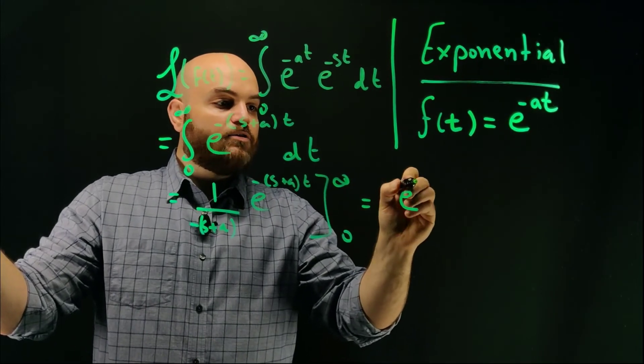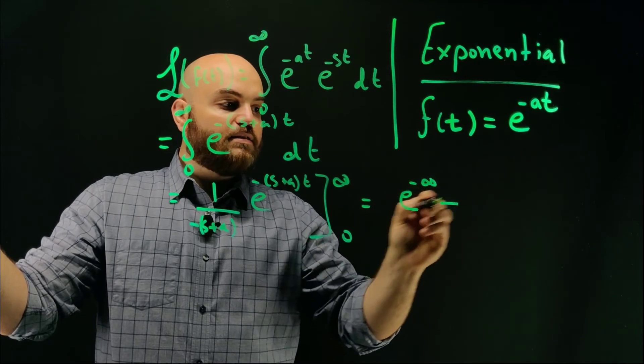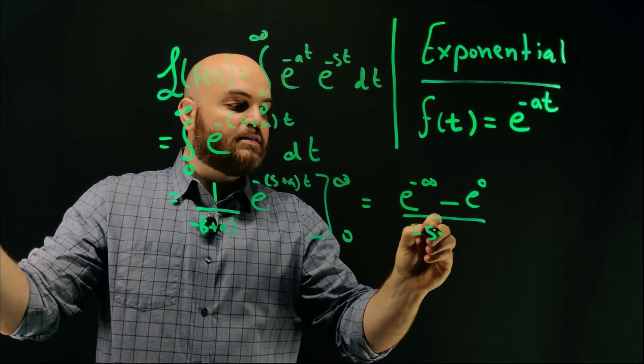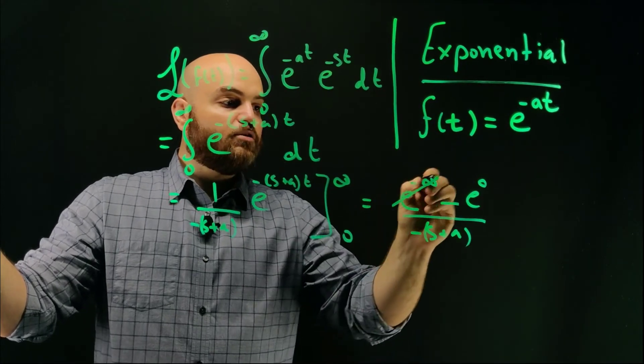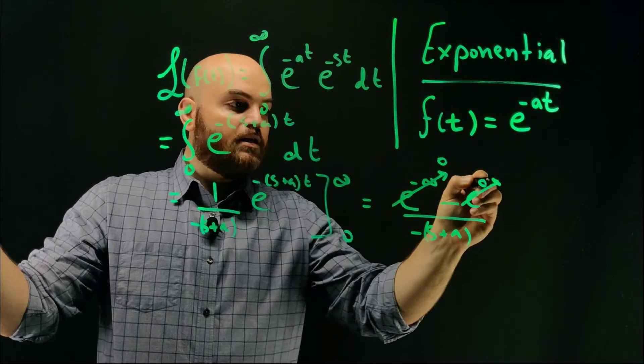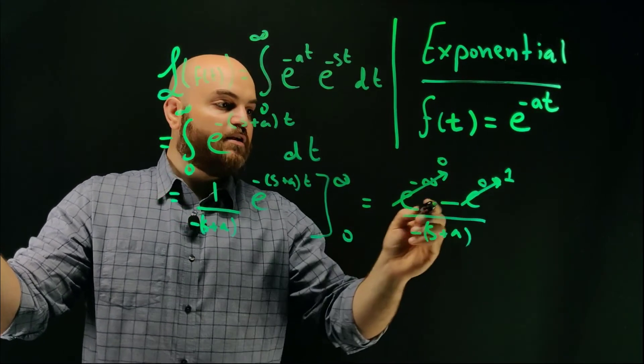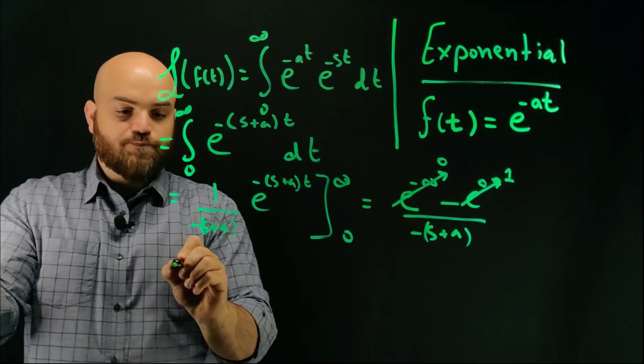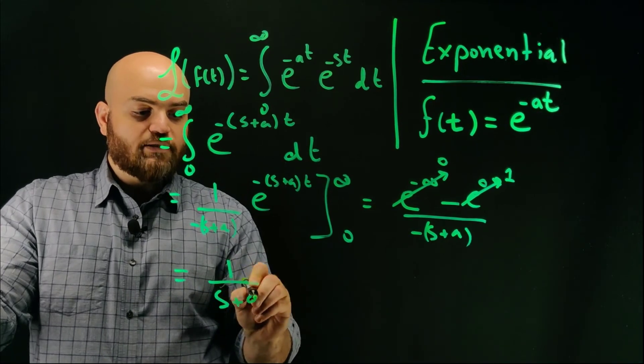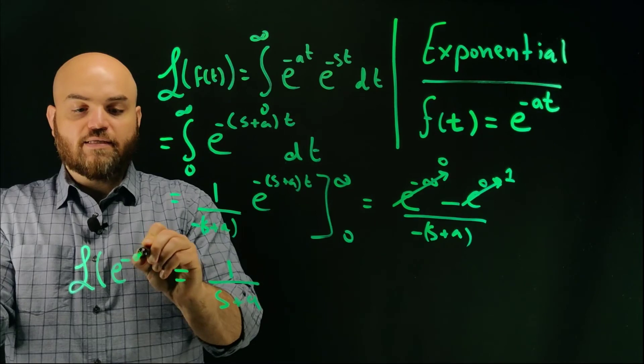And so if we do that, we get e to the minus infinity minus e to the zero divided by minus s plus a. And so this term, e to the minus infinity, will go to zero. This term right here is one. And there's a negative sign here. So it's minus one over minus s plus a, which is one over s plus a. So that's the Laplace of e to the minus at.